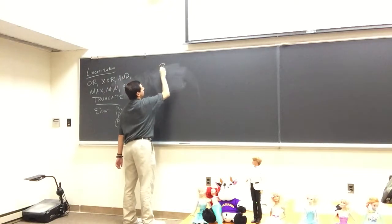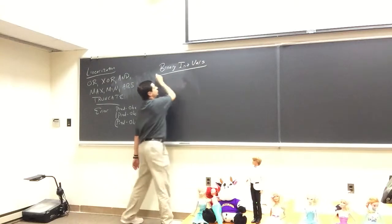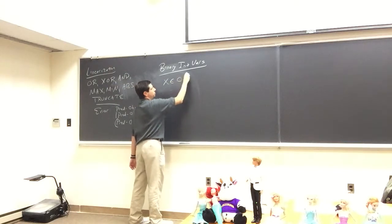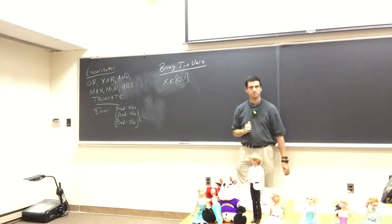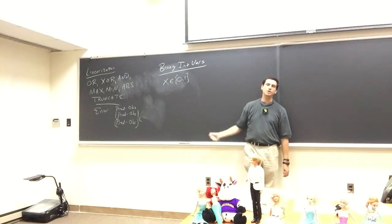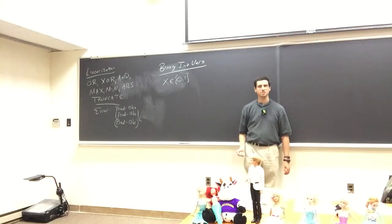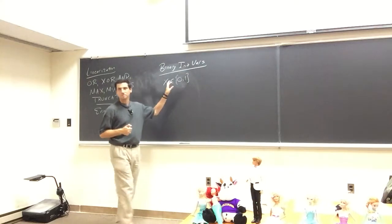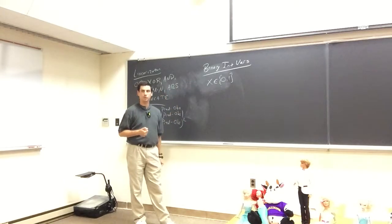Let's do binary integer variables. Basically, x will be in {0, 1} — it's either on or off, it happens or it doesn't. Think of it as: the movie is showing on a given screen at a given time, the plane takes off. You could use binary variables to indicate when something has happened.